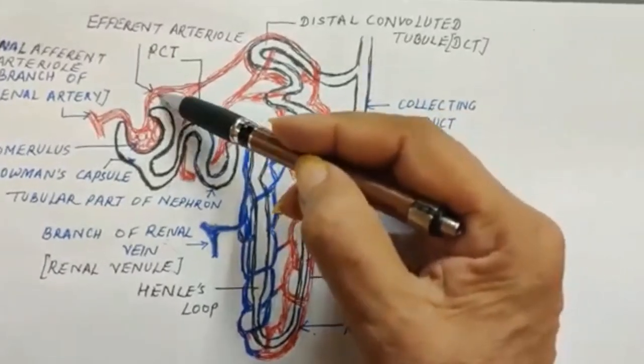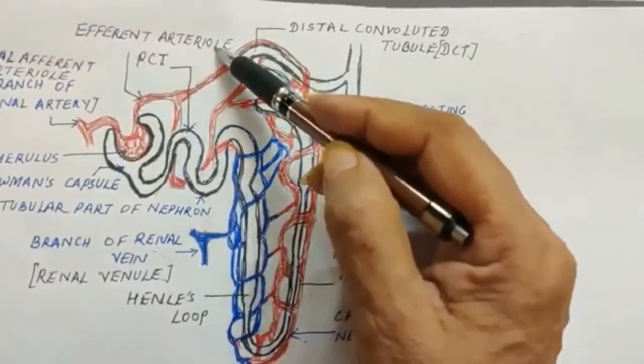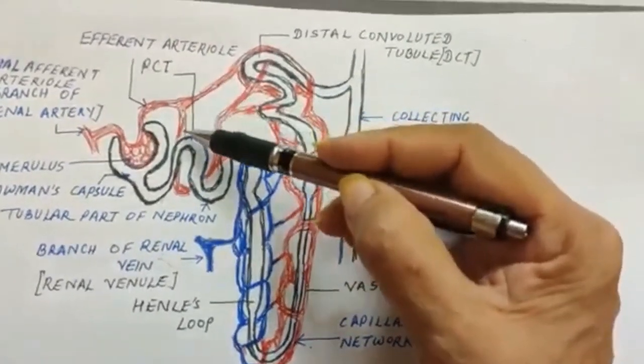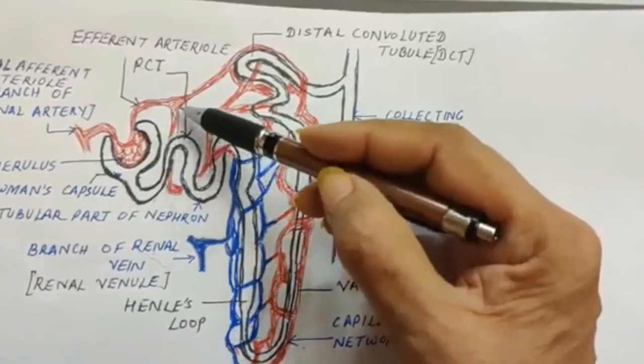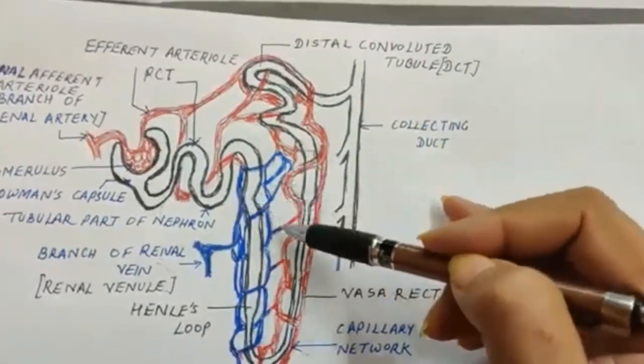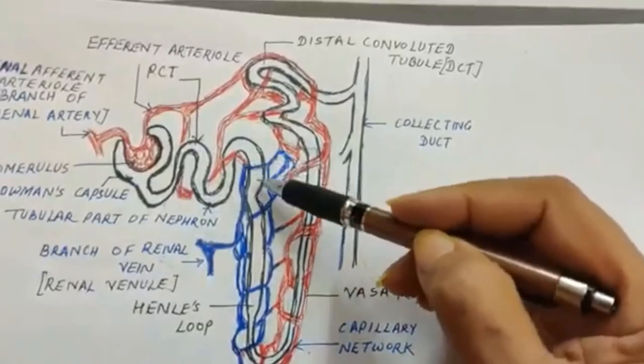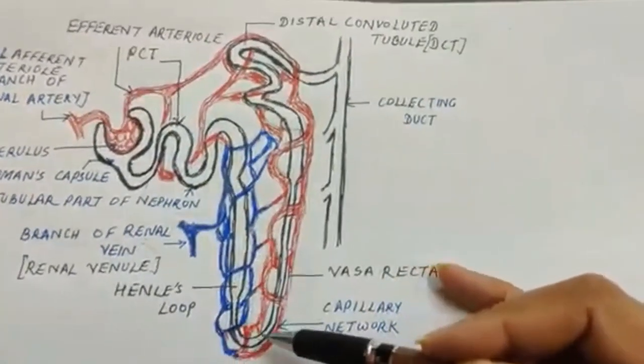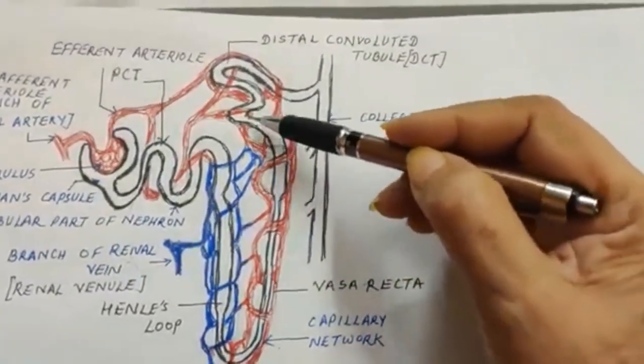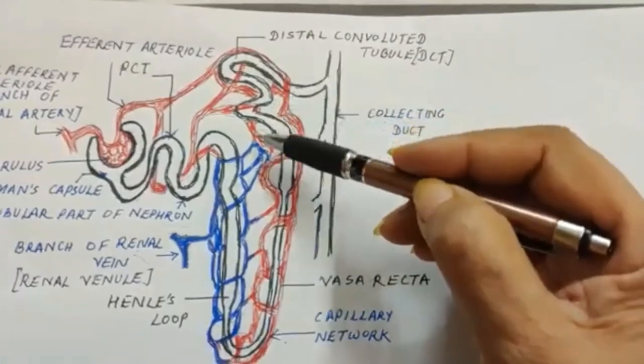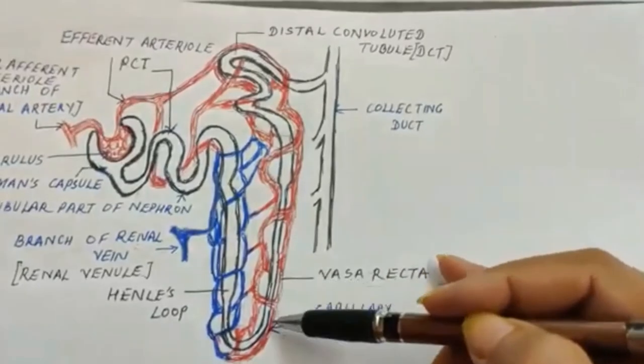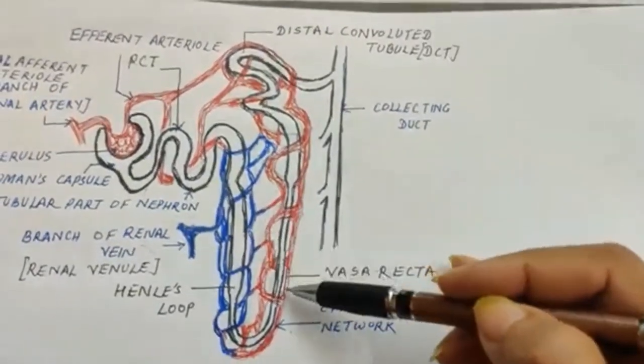And the blood comes out as efferent arteriole. Efferent arteriole carries the blood which has been filtered here, and now it breaks into a capillary network around the nephron tubule - the PCT, the Henley's loop as it is going down and coming up is called descending limb and the ascending limb, and the DCT, the distal convoluted tubule.